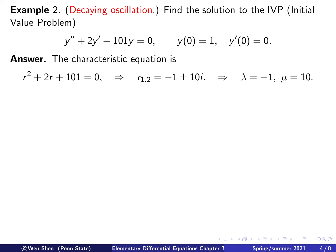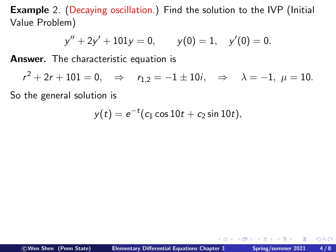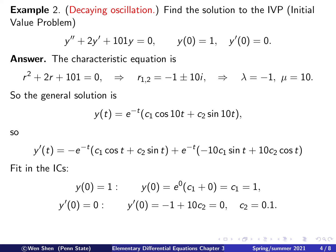The real part is lambda = −1 and the imaginary part is mu = 10. Using the formula derived earlier, the general solution is e^(−t) times [c1·cos(10t) + c2·sin(10t)], where c1 and c2 are arbitrary constants to be determined using the initial conditions.